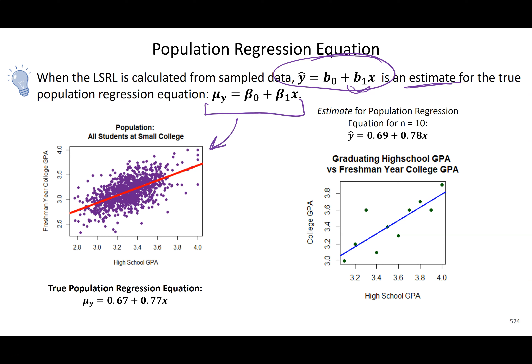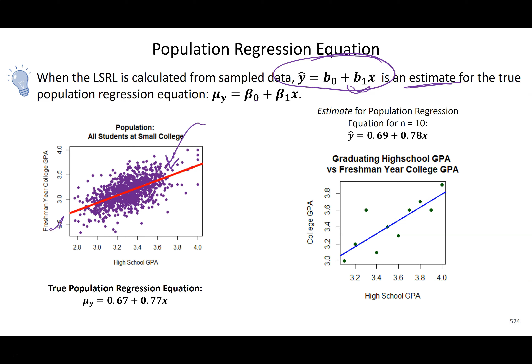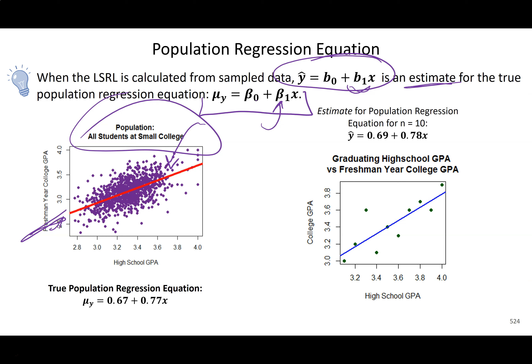The idea behind the population equation is: if I had all data points in the entire population and fit a master line to all those data points, I'd get mu of y — the mean of y — equal to beta-naught (the y-intercept for all students at this small college) plus beta-1 times x. If we had the entire population at hand, the least squares regression line calculated from that would give us the population line.